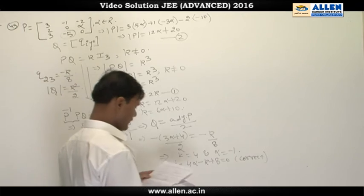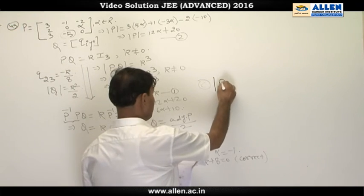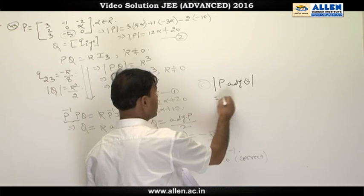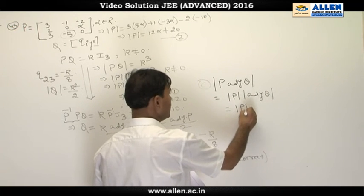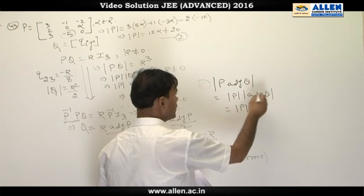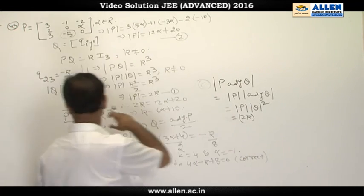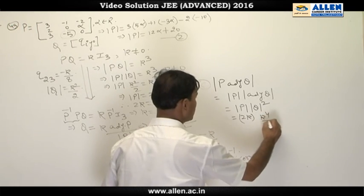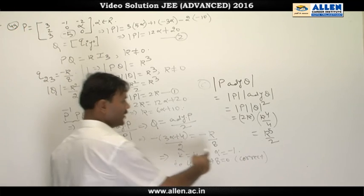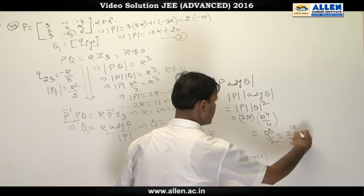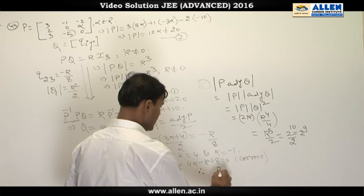For option C, we compute det(P) × adj(Q). This equals det(P) × det(Q)², since for a square matrix of order 3, det(adj Q) = det(Q)². With det(P) = 2k and det(Q) = k²/2, this becomes 2k × (k²/2)² = k⁵/2. Substituting k = 4 gives 4⁵/2 = 1024/2 = 2⁹, confirming option C is also correct. Therefore the correct options are B and C.